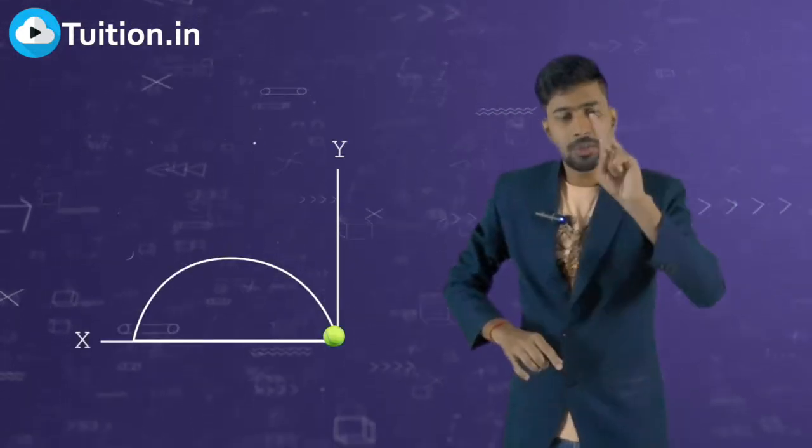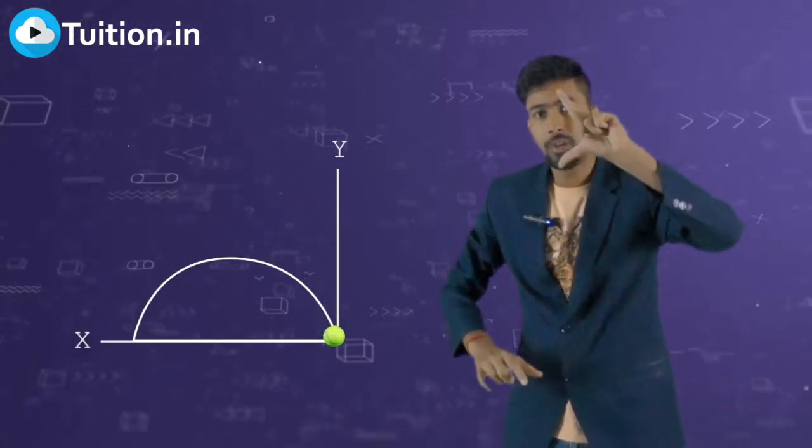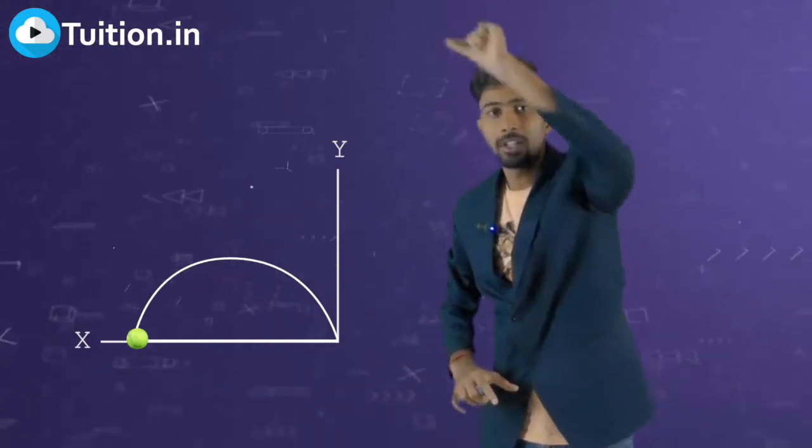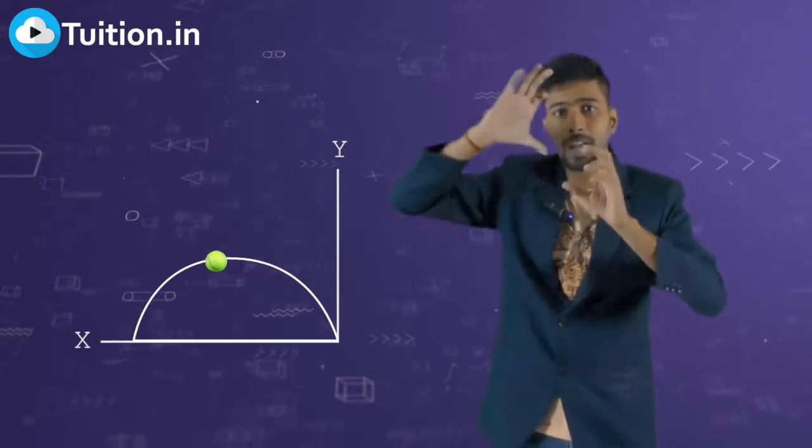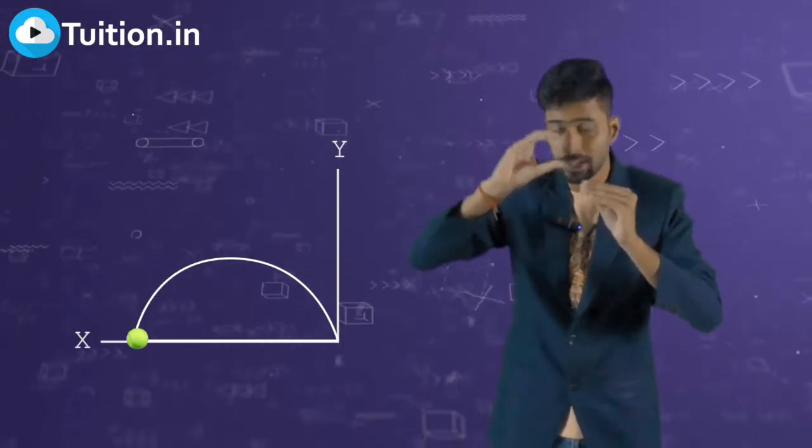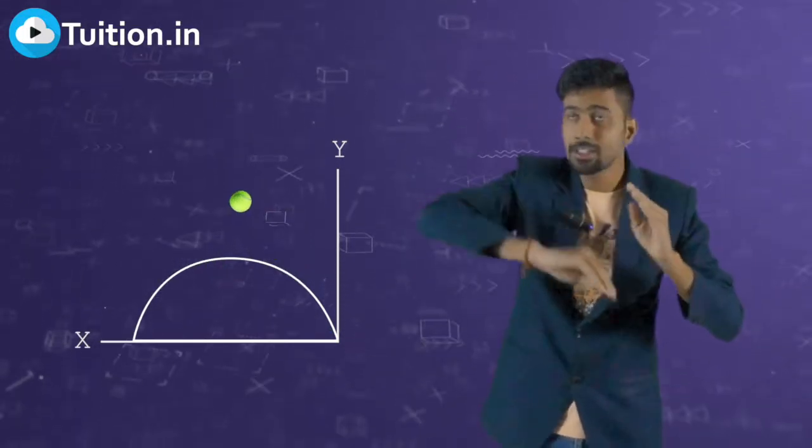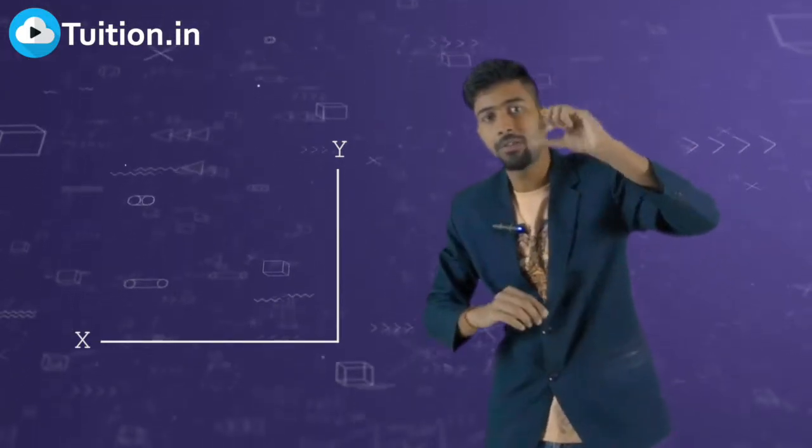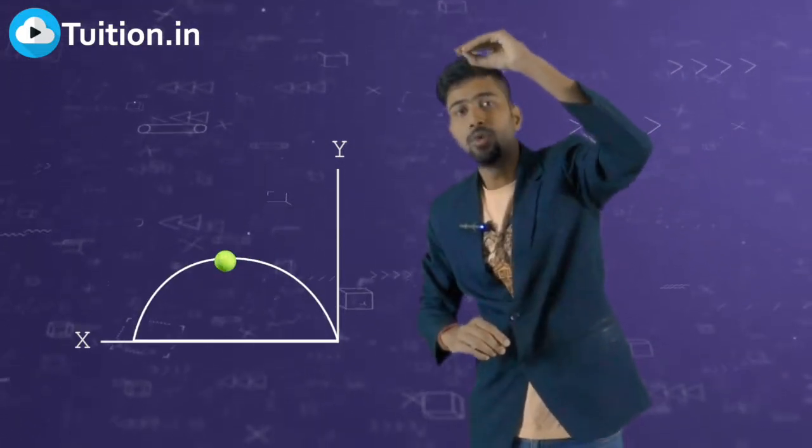But as far as Y velocity or Y direction motion is concerned, this particular Y velocity which had this much length, after a period of time as it keeps going up, the length of this velocity vector decreases. Or you could say that the magnitude of the Y velocity vector decreases. Had it not decreased, it would keep going upwards. But the problem is, it is decreasing. So after a period of time, it starts slowing as it moves up.